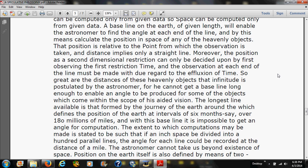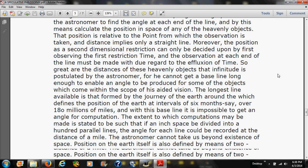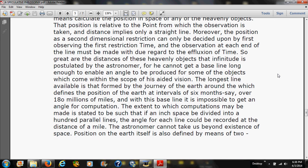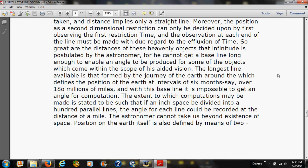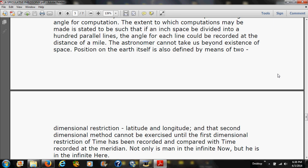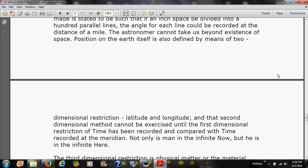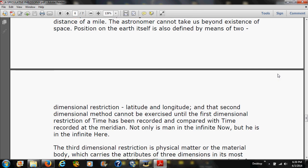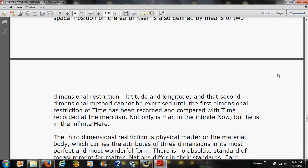The extent to which computations may be made is stated to be such that if an inch space be divided into a hundred parallel lines, the angle for each line could be recorded at the distance of a mile. The astronomer cannot take us beyond existence of space. Possession on the Earth itself is also defined by means of two-dimensional restriction, latitude and longitude. And that second dimensional method cannot be exercised until the first dimensional restriction of time has been recorded and compared with time recorded at the meridian. Not only is man in the infinite now, but he is in the infinite here.